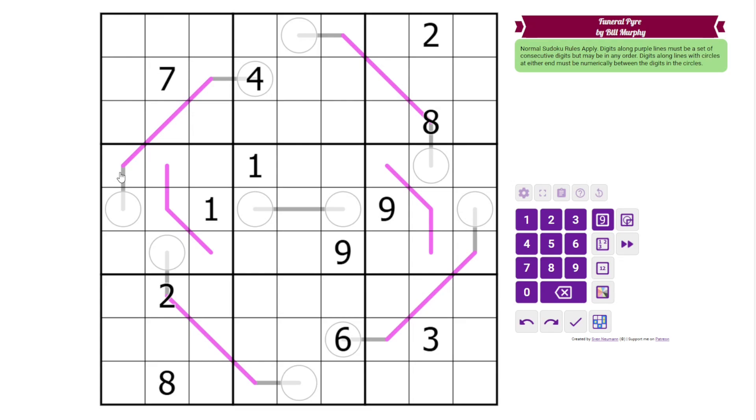Additionally, we have some purple lines in the grid. And along these purple lines, we need a consecutive set of digits, but they can be in any order. So for example, this could be the set, say, six, seven, eight, something like this.